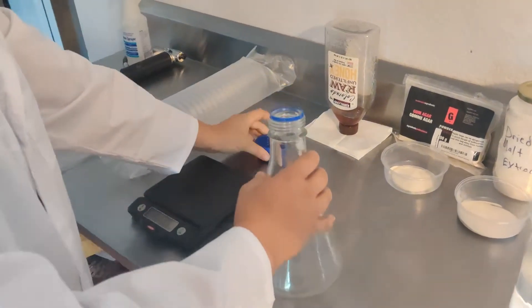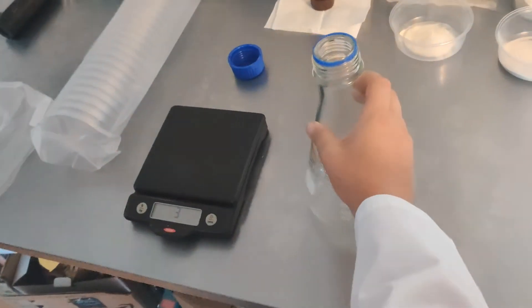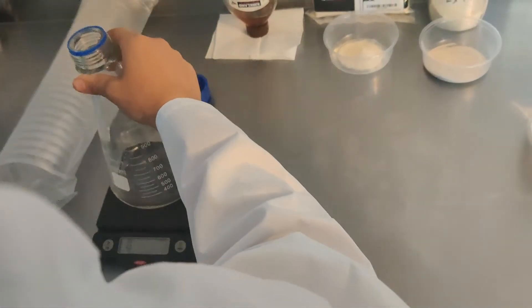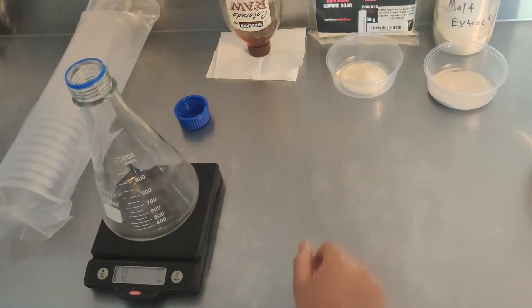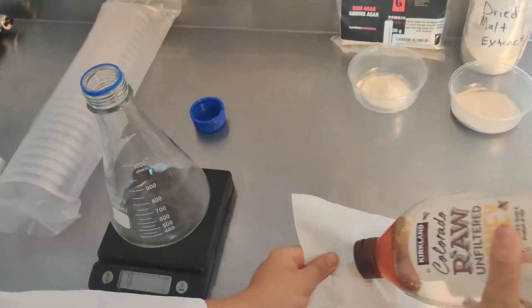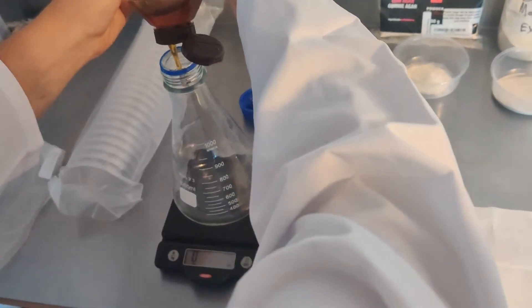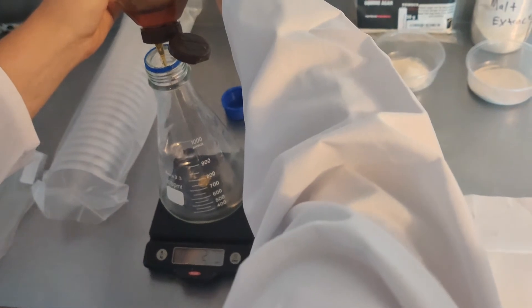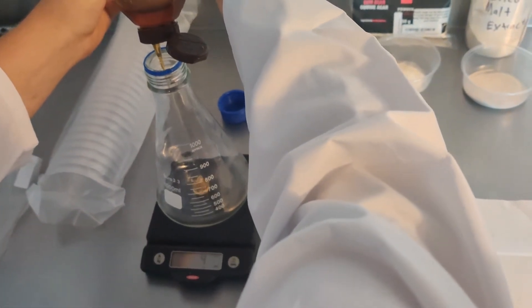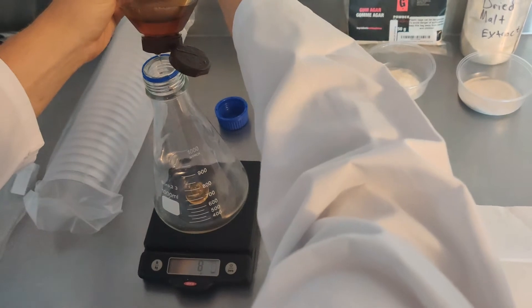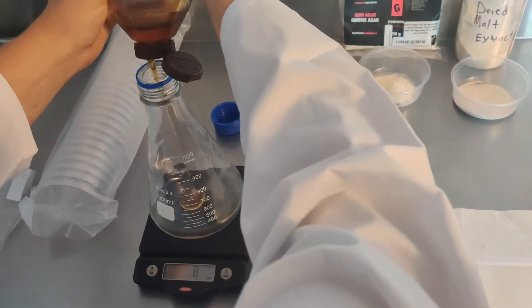First we'll add the honey to the Erlenmeyer flask. Today we're pouring 500 milliliters of agar solution, so we're going to use about 10 to 15 grams of honey.